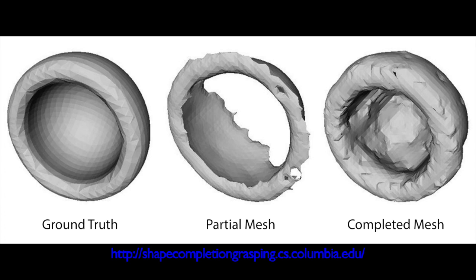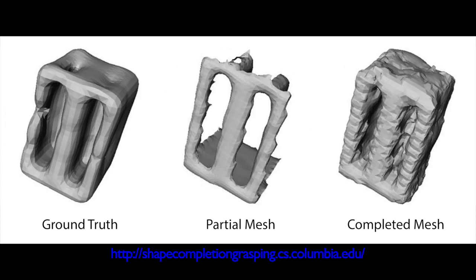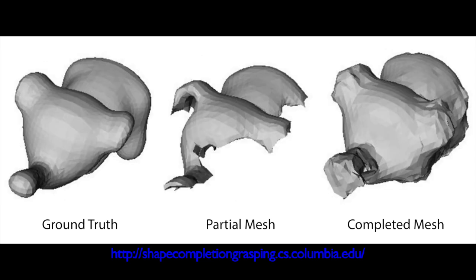In conclusion, this work presents a framework to train and utilize a CNN to complete a meshed object generated from a single point of view, and then plan grasps on the completed object.